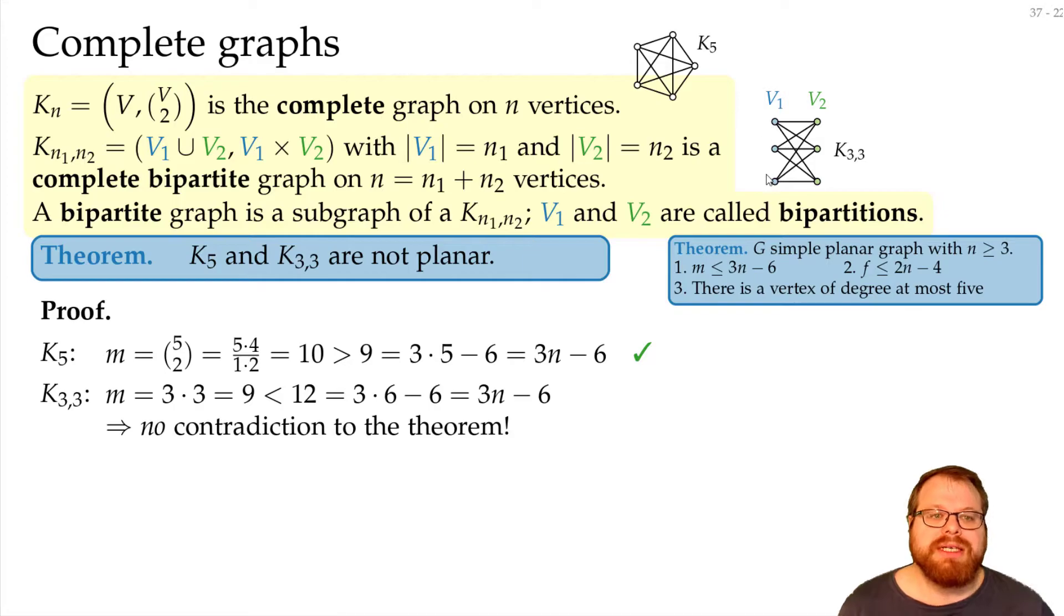It first has to go again to a green one. So the smallest cycles we have in this graph is of length 4. That means every face has at least 4 edges on its boundary.